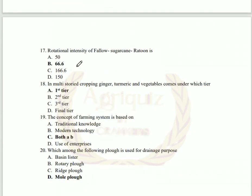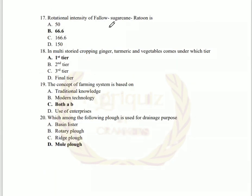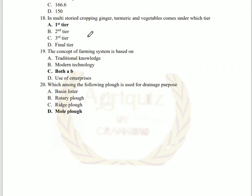Question number 17: the rotational intensity of fallow, sugarcane, and ratoon is 66.6. In multi-storeyed cropping, ginger, turmeric, and vegetables come under the first tier. Banana and papaya come under the second tier. And coconut and areca nut come under the final tier.